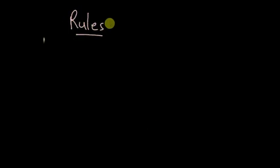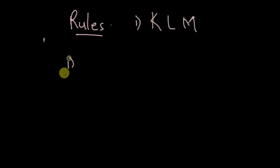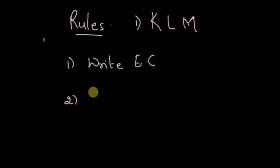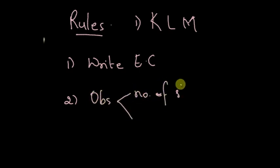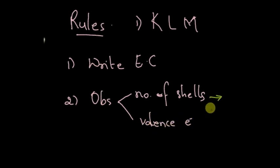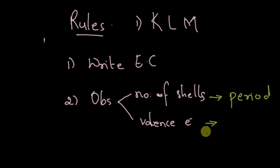Here are the rules you need to keep in mind for the KLMN form. First, write the electronic configuration. After that, observe the number of shells and the valence electrons. The number of shells tells you the period of the element, while the number of valence electrons indicates the group of the element.